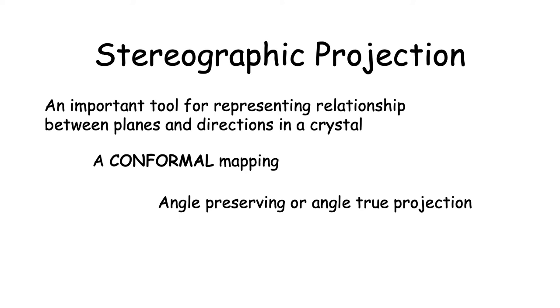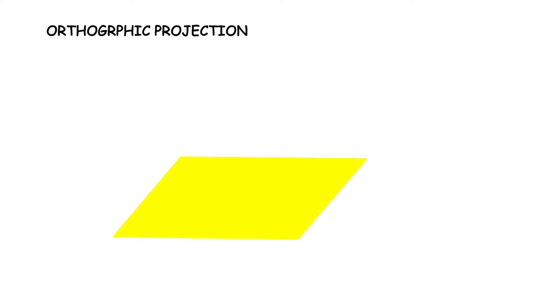If I have two directions, then by looking at the projection of those directions, I can find the angle between them. This is not always true — for example, an orthographic projection is a familiar counterexample. Here I have a horizontal plane in which I wish to project directions lying in this vertical plane. I have a direction OM and another direction ON in the same vertical plane at an angle phi to OM.